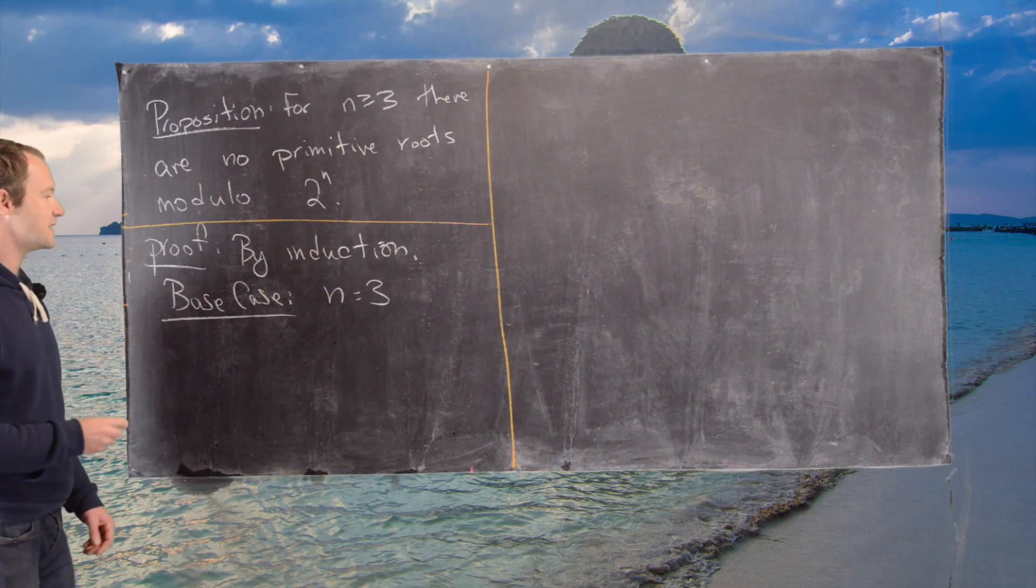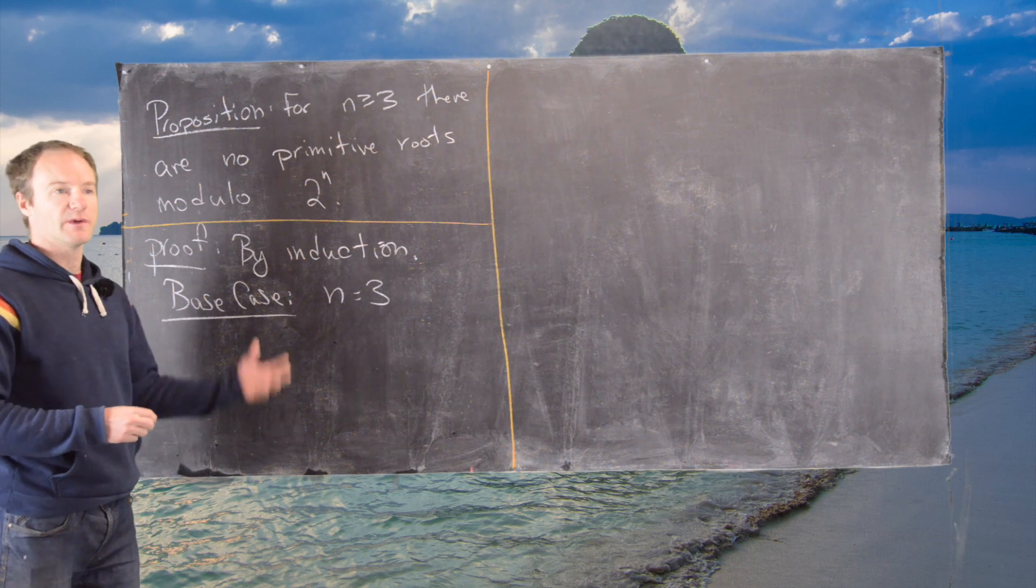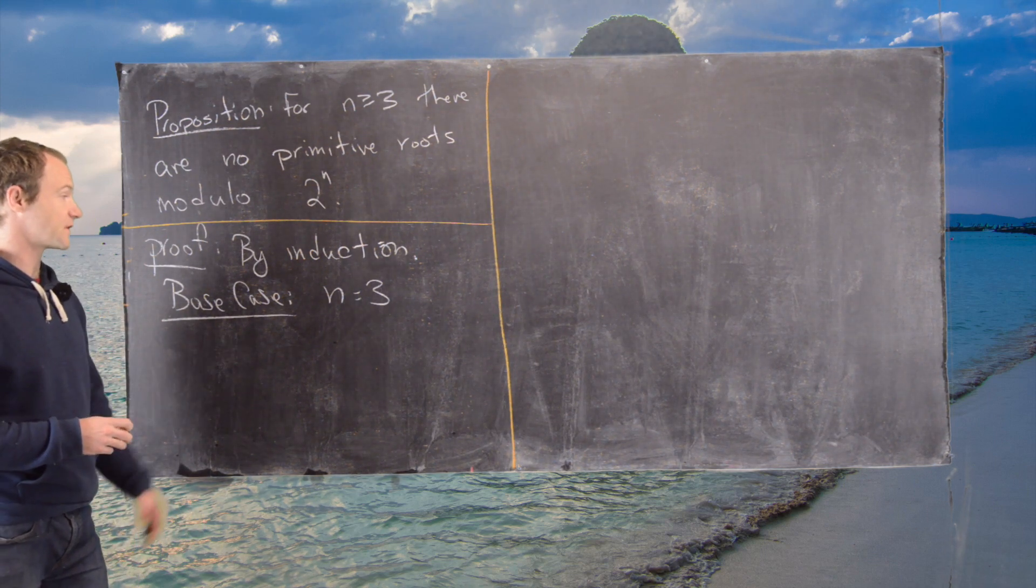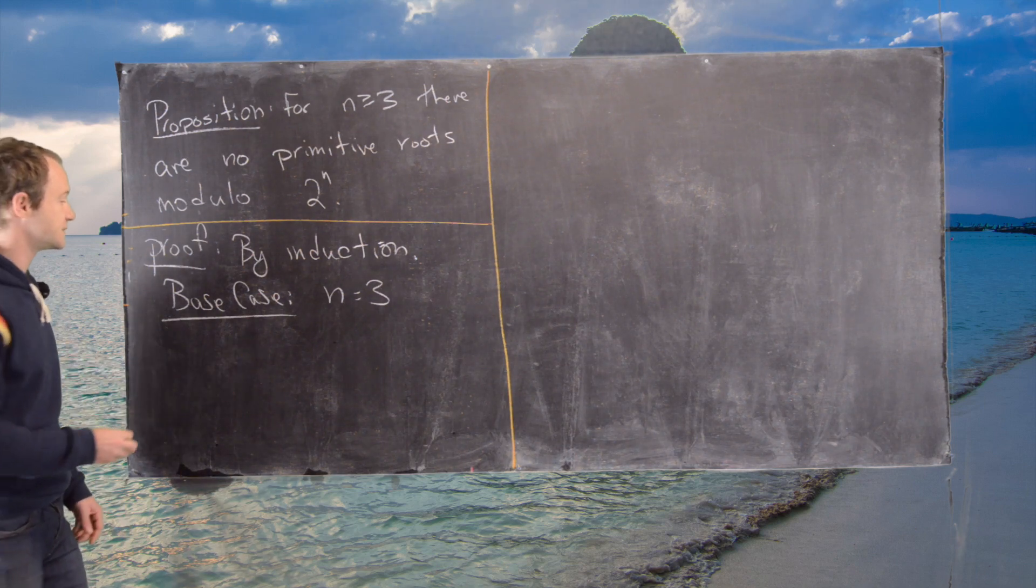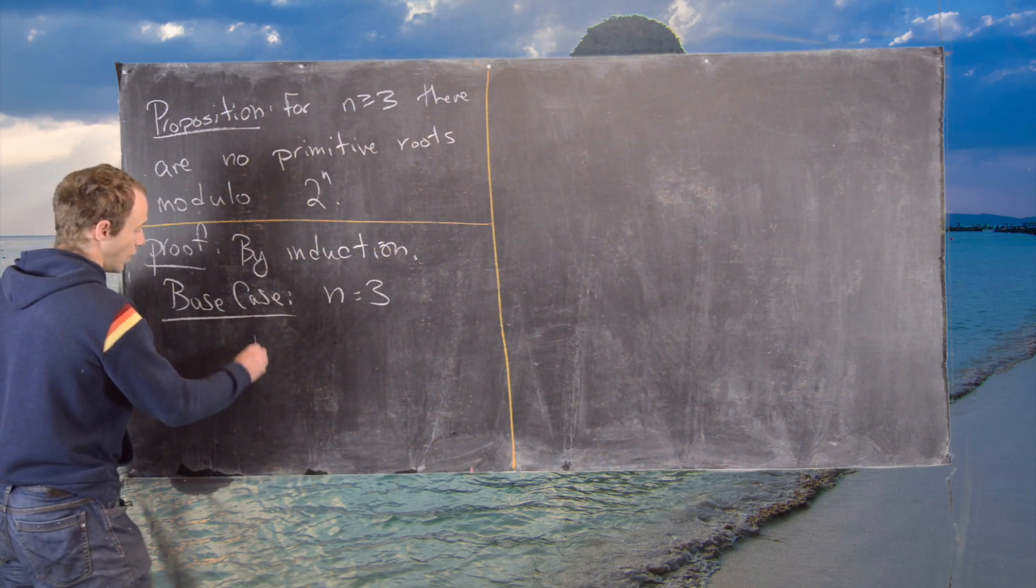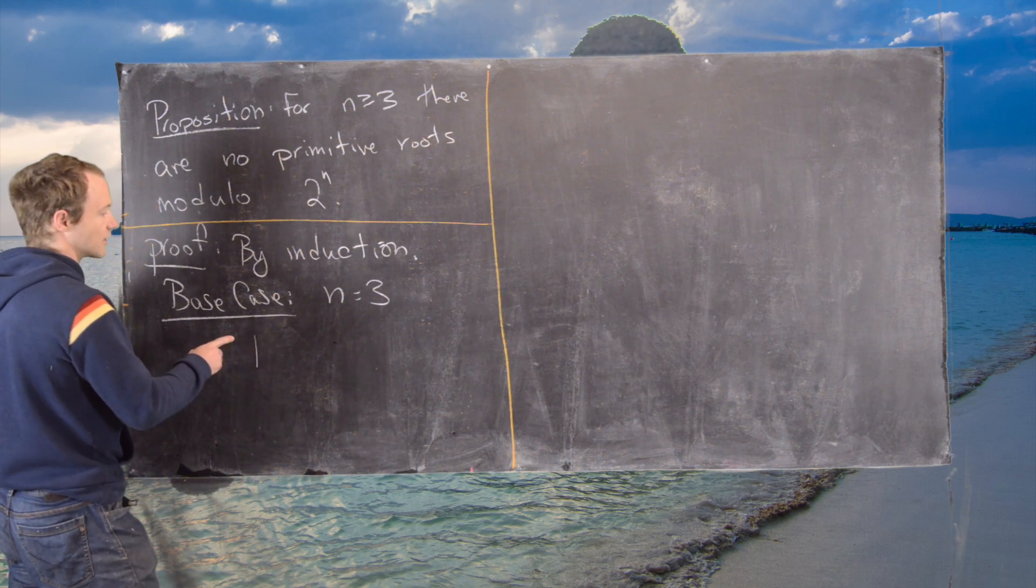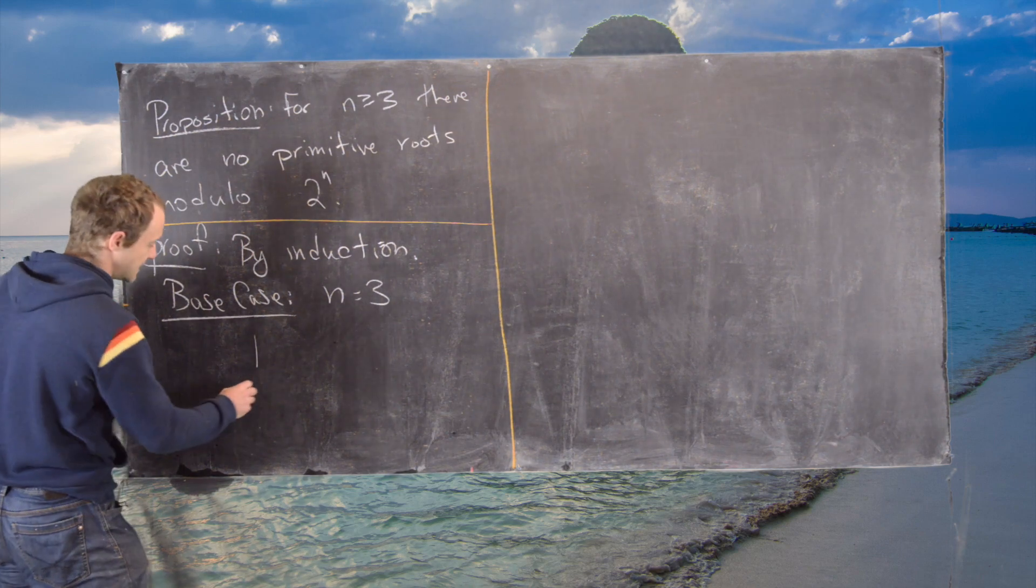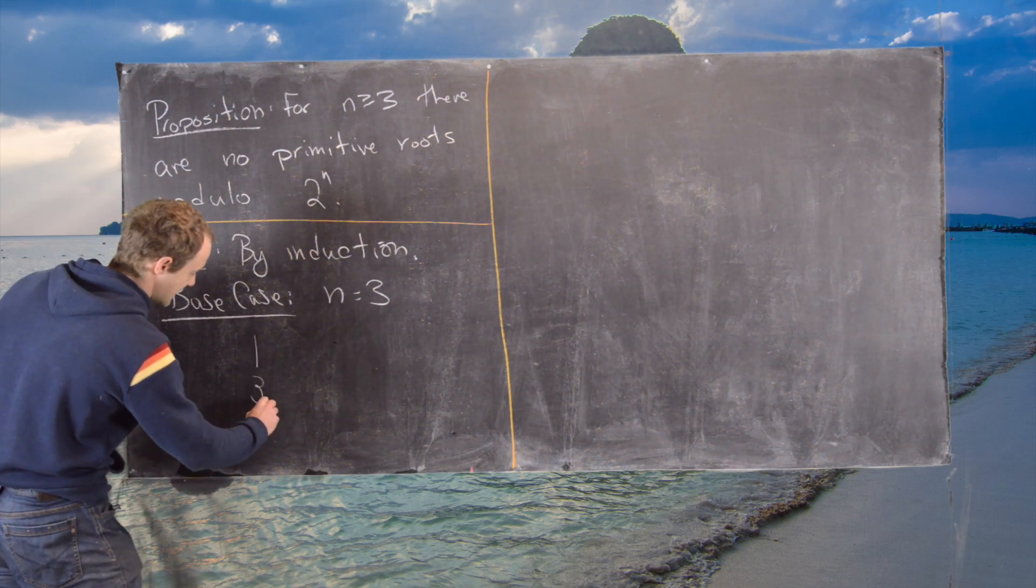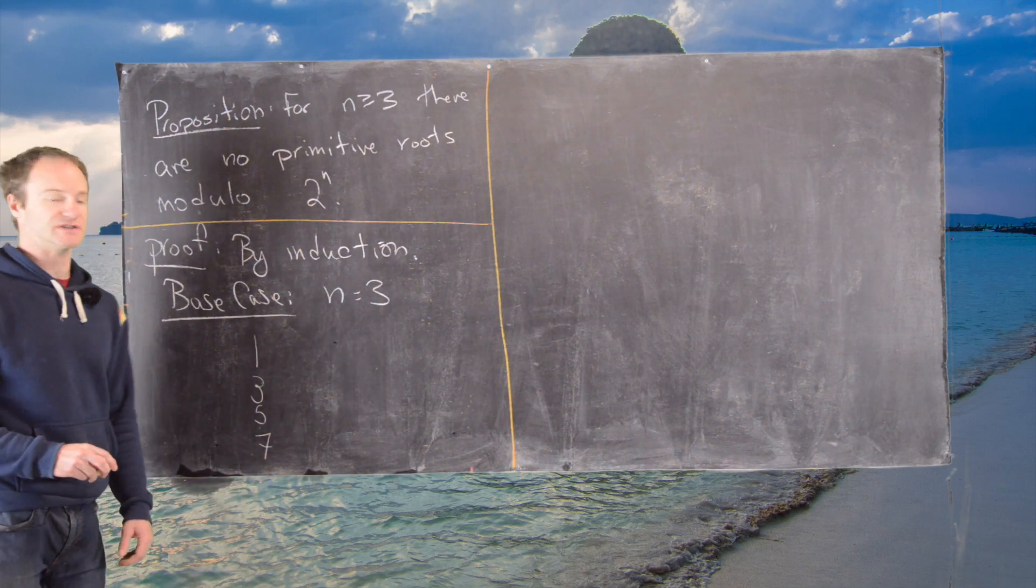And now notice, in order to have a primitive root modulo 2 to the 3, which is 8, well we have to start with an odd number in the first place. And so the only things we need to check are the following. We need to check that 1 does not have order 4, which is phi of 8. That 3 does not have order 4, which is phi of 8. That 5 and that 7 also do not have order 4, which is phi of 8.